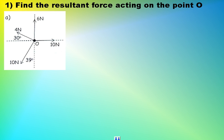Okay, we're looking at four forces acting on a point O: six newtons vertical, ten newtons to the right, four newtons to the left at an angle of 30 degrees above the horizontal, and ten newtons below the horizontal at 39 degrees to the vertical line there.